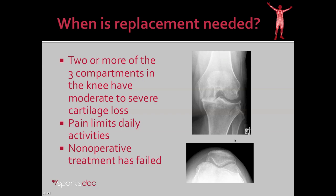When is a knee replacement needed? The x-rays are helpful. If there's two or more of the three compartments of the knee that are involved with moderate to severe arthritis. As you can see here, here's the three compartments: medial, lateral, and patellofemoral. On the inside of the knee here, there's no space between the bones in this standing view. Over here, the space is maintained by cartilage and meniscus. Here you have bone touching bone, so that's severe arthritis.